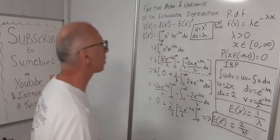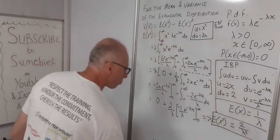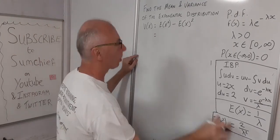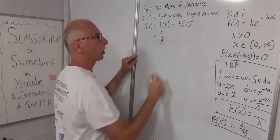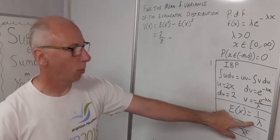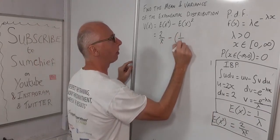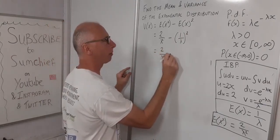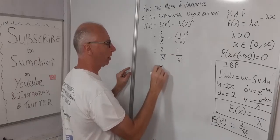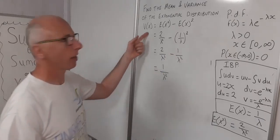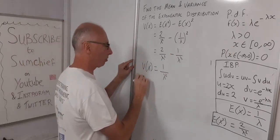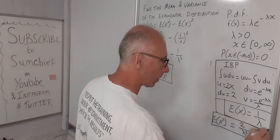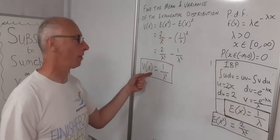Now we have all the components to work out our variance. Var(X) = E[X²] - (E[X])² = 2/λ² - (1/λ)² = 2/λ² - 1/λ² = 1/λ². So the variance of the exponential distribution is 1/λ². It's all about integration, but we got there in the end. Our mean is 1/λ and our variance is 1/λ².